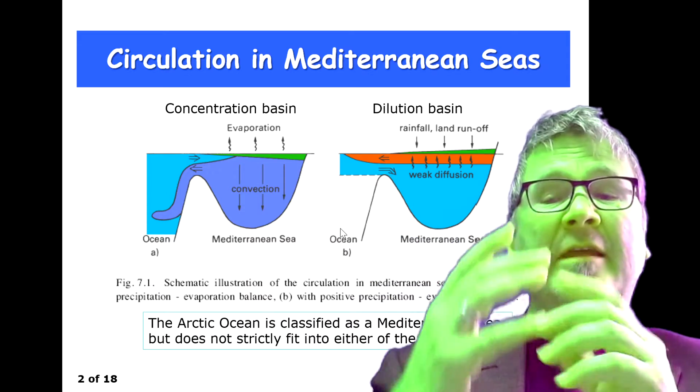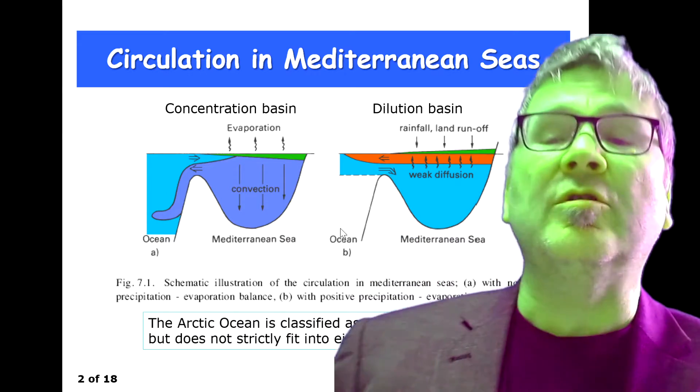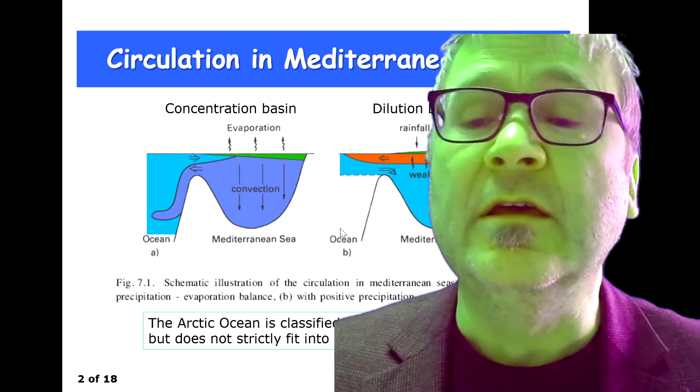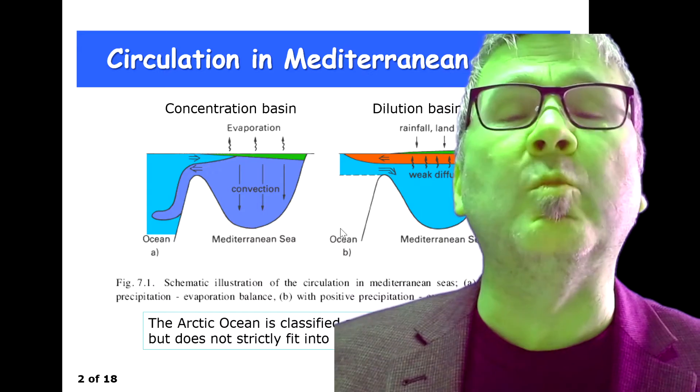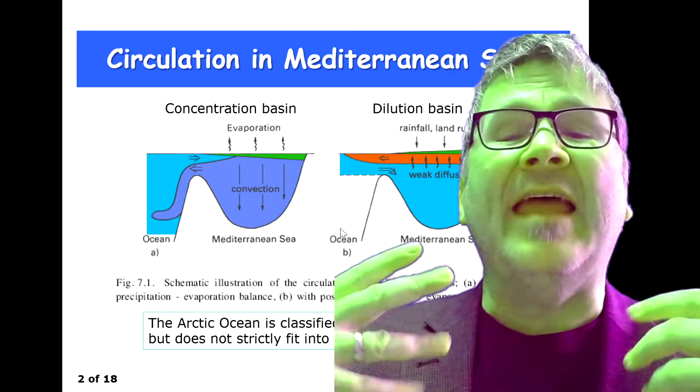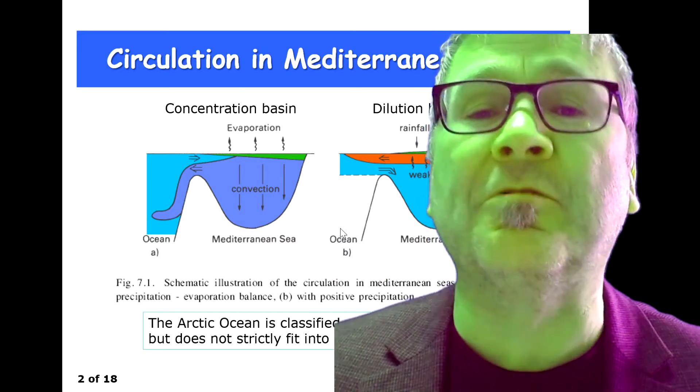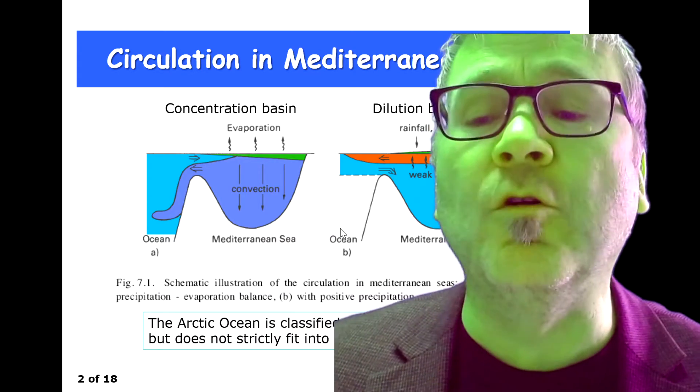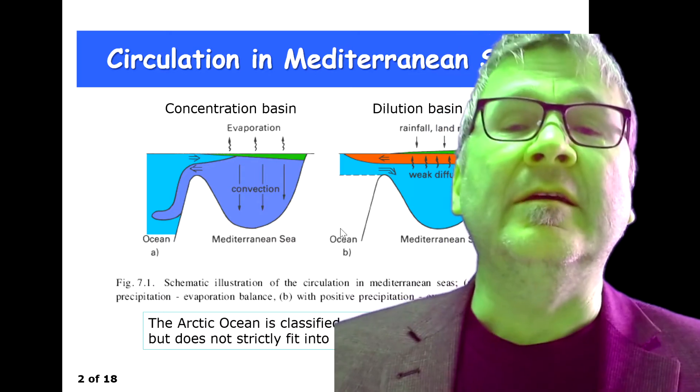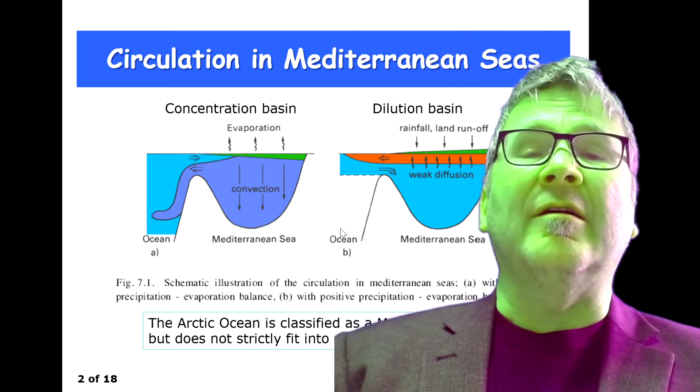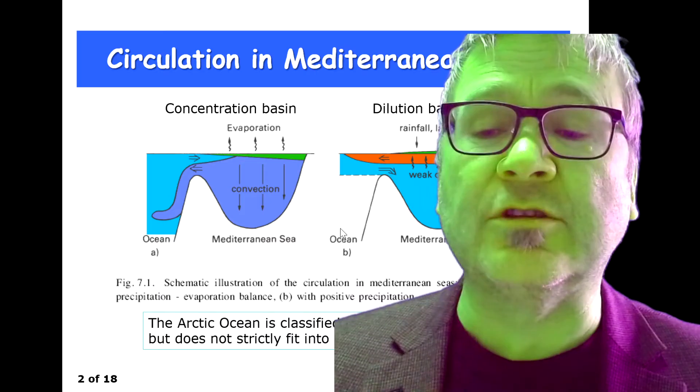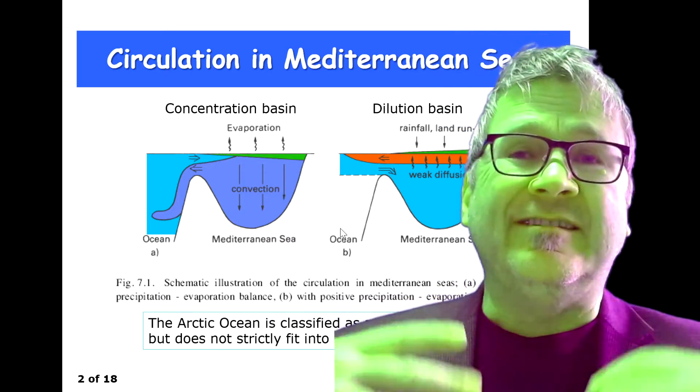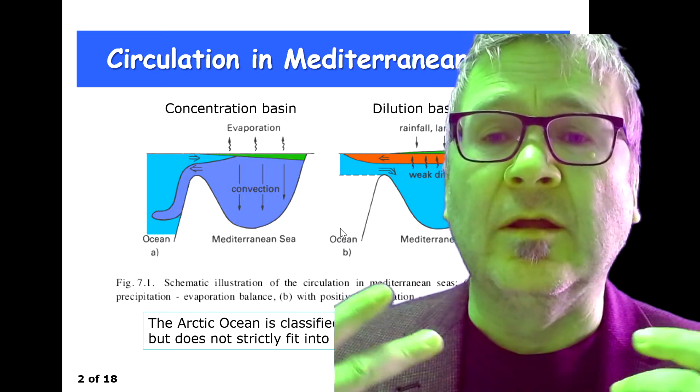There are two different types of Mediterranean seas. One is called a concentration basin, shown here on the left side. The concentration basin is one where you have an excess of evaporation over the supply of fresh water through rivers and rainfall. As a consequence, these regions are hypersaline regions through convection.